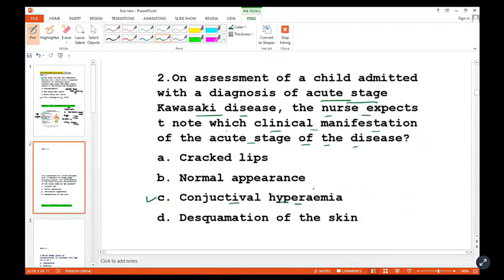Conjunctival hyperemia is dilation of the blood vessels of the conjunctiva. The conjunctiva is the sclera, and in the conjunctiva part there is dilation of the blood vessels.